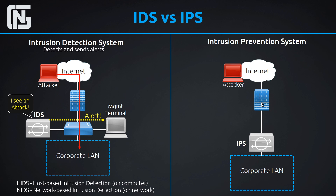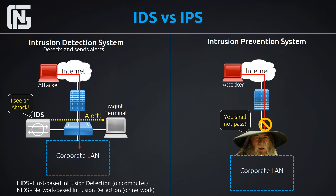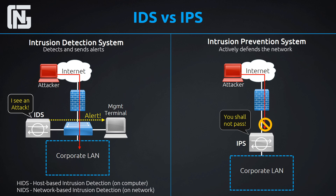If an attacker makes it through the firewall, our IPS can still possibly help us stop the attack. The basics: an attacker on the internet makes it through our firewall, the IPS catches that attack and says 'you shall not pass' and denies that connection. In addition to detecting and alerting, the key difference is that the IPS actively defends the network, whereas the IDS just detects and sends alerts.